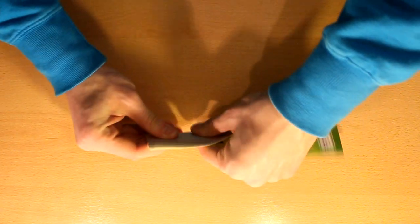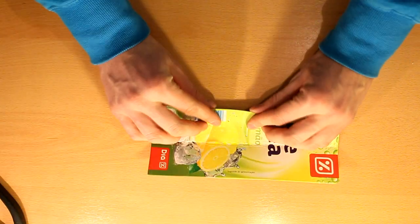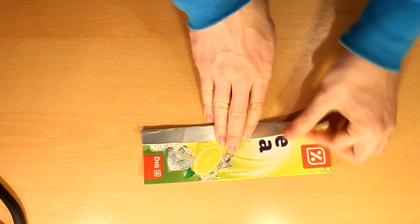Fold it in half. And using the pliers, crease it. Fold it again. But don't touch the middle line.